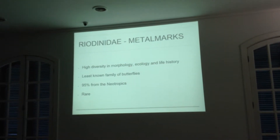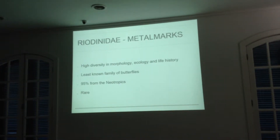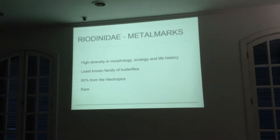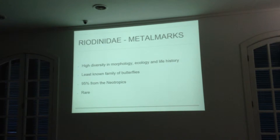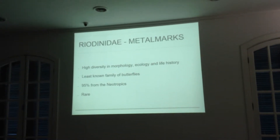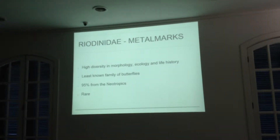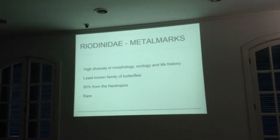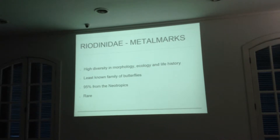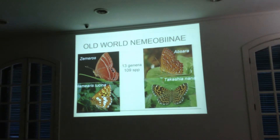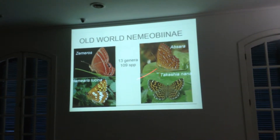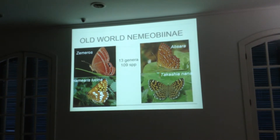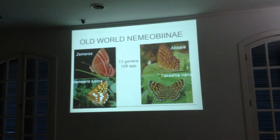These are metalmarks, known by that name in English. They're a very interesting group because they have very high morphological, ecological, and life history variation — much more than other butterfly families. It's the least known family of butterflies, mainly because 95% are neotropical and primarily Amazonian, resulting in an incredible lack of collection. They are also temporally and spatially rare — very common in a moment and place, but gone a week later. There is also an Old World subfamily of around 109 species occurring in the paleotropics, mainly Southeast Asia and Africa, with one species in Europe.